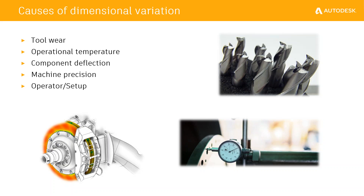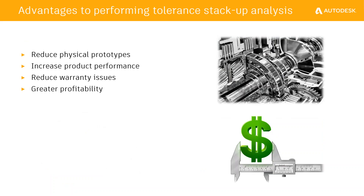What causes dimensional variation? Tool wear is an obvious one. Operational temperature of the mechanism, machining itself, component moving during machining or operation, machine precision — maybe your machine is old or hasn't been calibrated in a long time. Then lastly, human error: misreading a dimension, misreading the print, or a misprogrammed machine. There's a lot of things that play into it, and the Inventor utility can help you figure out if that's playing into your design.